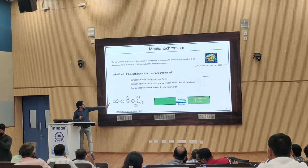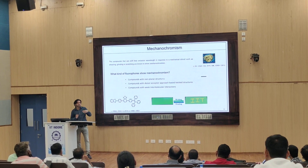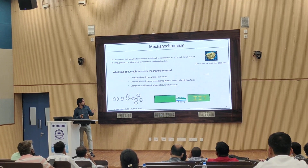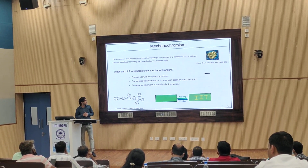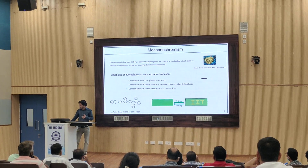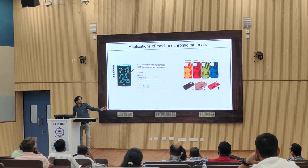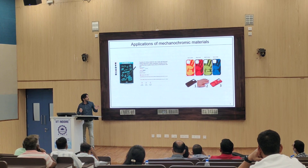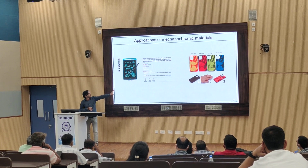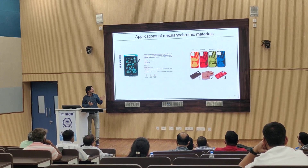We employed this compound as a rewriteable ink — a film coated with the compound was used, and writing letters on it by applying mechanical pressure caused that area to change color from green to yellow. These texts can be removed by fuming the film in the presence of vapors of suitable solvents. This application is analogous to commercial electronic writing pads available on Amazon and Flipkart, where writing with a pen or finger causes the area to glow, and applying a smear with the palm resets it.